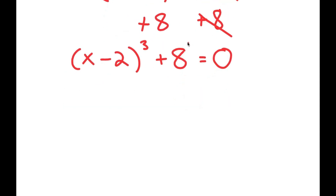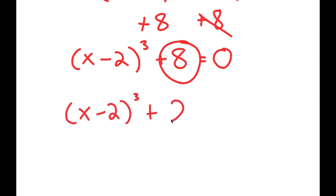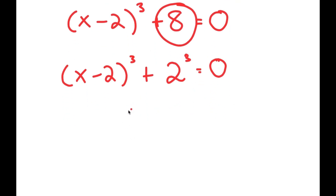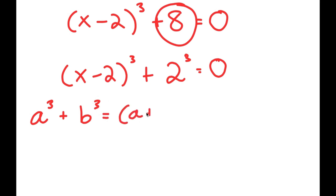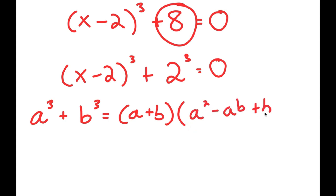From here, I can rewrite 8 as 2 to the power of 3. So I have (x minus 2) to the power of 3 plus 2 to the power of 3 equals 0. The reason I did that is because if I have something in the form a cubed plus b cubed, this is equal to (a plus b)(a squared minus ab plus b squared).